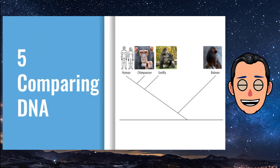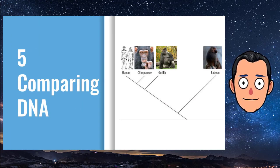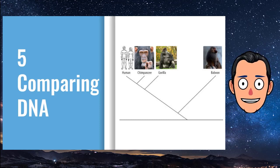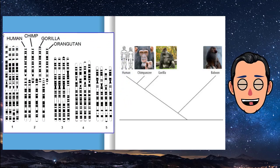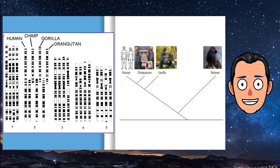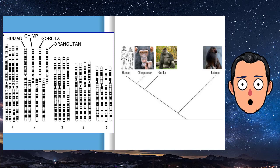Comparing DNA: Darwin could compare only the anatomy and embryos of living things. Today, scientists can compare their DNA. Similar DNA sequences are the strongest evidence for evolution from a common ancestor. The cladogram shows how humans and apes are related based on their DNA sequences.